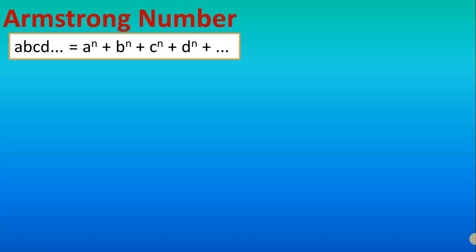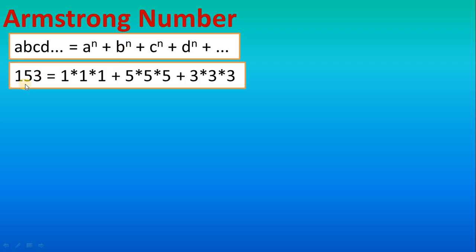In this tutorial we will solve the Armstrong number task using a while loop. An Armstrong number means, suppose a number has digits a, b, c, d — if it equals a^n + b^n + c^n + ... + d^n, then it is an Armstrong number. For example, take the number 153: it has three digits, so the logic is 1 cubed plus 5 cubed plus 3 cubed. If we had a four-digit number, it would be each digit raised to the power of four.